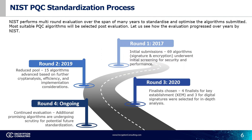The NIST has been performing a multi-round evaluation of algorithms for PQC since 2017. This extensive evaluation period has allowed many algorithms to participate and be filtered down to find the most efficient and secure algorithms for use by the entire public sector. In 2017, there was an initial submission of 69 algorithms for signature and encryption, which underwent initial screening for security and performance. By 2019, the NIST had reduced the pool to 15 algorithms, advanced based on their efficiency, implementation difficulty, and cryptographic security analysis.